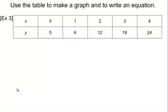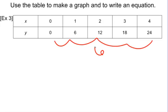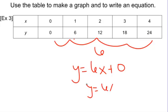Now, use a table to make a graph and to write an equation. A really easy way to make an equation from a table is to figure out what it's going up by — it's going up by 6 — so that means it's y equals 6x. Whatever it's going up or down by, that's what you multiply by x. Then you add the 0 term — here the 0 term is 0 — so it's y equals 6x plus 0, which is just y equals 6x.